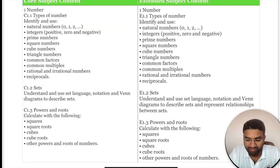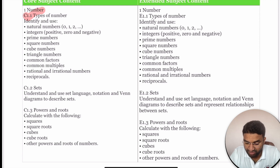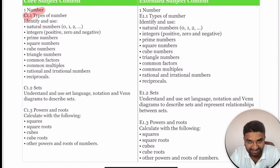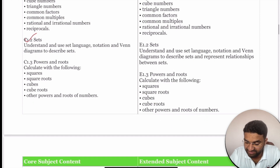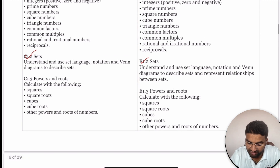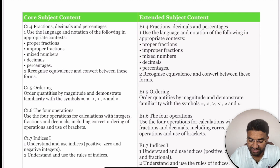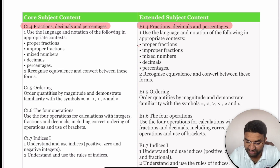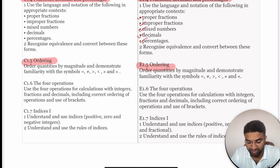Under the Number topic, basic core concepts include types of numbers — prime, square, cube, triangle numbers, common factors, multiples, LCM, HCF, and reciprocals. Both Core and Extended students cover rational and irrational numbers, sets, powers and roots, and fractions, decimals, and percentages — including proper, improper, and mixed fractions. Ordering and four operations are also common for both.